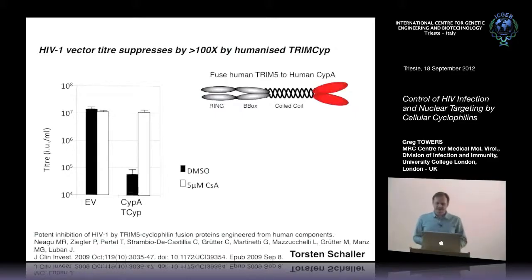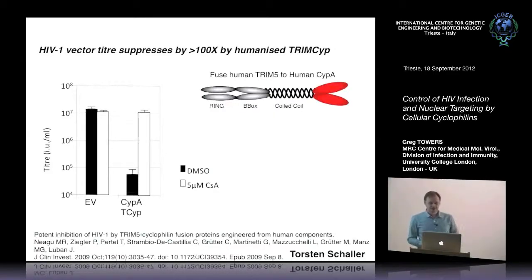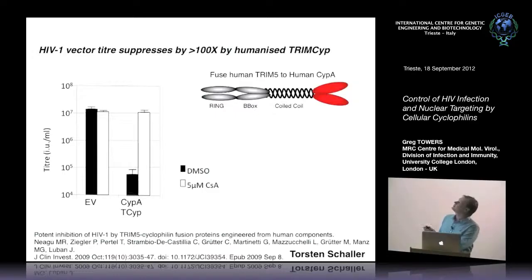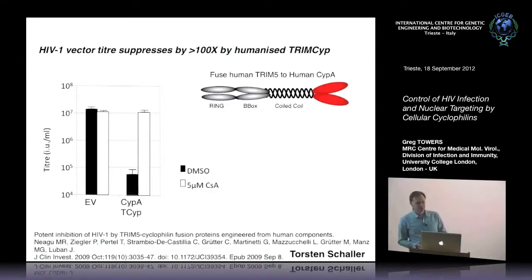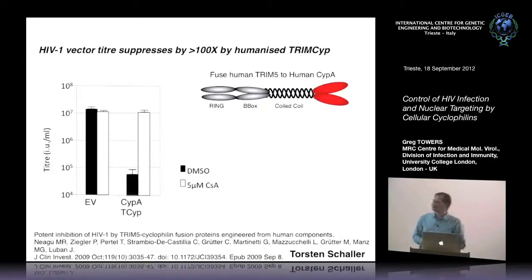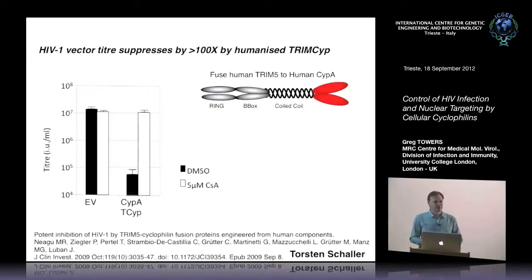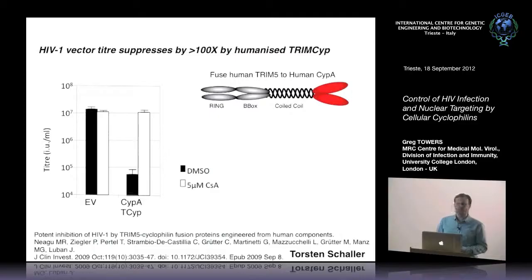One useful aspect of all this is that gluing cyclophilin A onto the end of TRIM5 suggests we can actually do gene therapy and treat HIV patients by recapitulating this evolution that occurred in monkeys - by fusing human TRIM5 to cyclophilin A and expressing that in a gene therapy context. That humanized protein very potently restricts HIV-1 infectivity. Jeremy Luban's lab took this into a humanized mouse model and showed TRIMCyp was very good at blocking HIV infection. Together with colleagues at Great Ormond Street and with Jeremy's help, we're aiming to put this into patients.